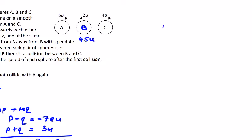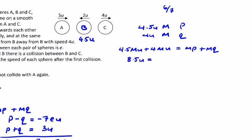They both have mass m. We have 4.5u and 4u giving p and q, and e is equal to 6 over 7. The principle of conservation of momentum: 4.5mu plus 4mu is equal to mp plus mq, so 8.5u is equal to p plus q. Then (p minus q) over (4.5 minus 4) over 0.5u is equal to minus 6 over 7, so 7p minus 7q is equal to minus 3u.